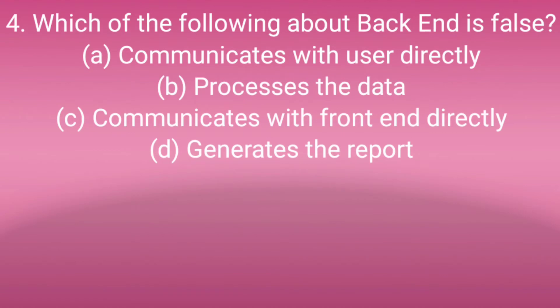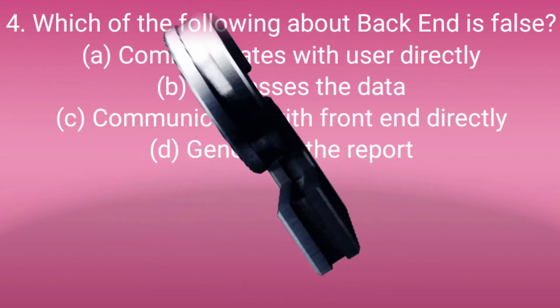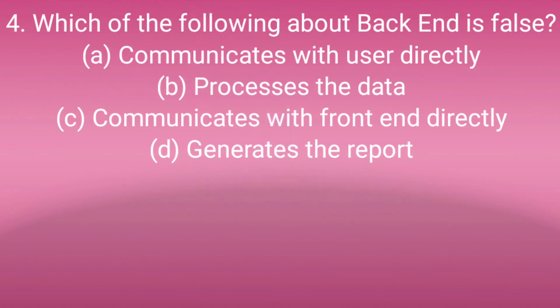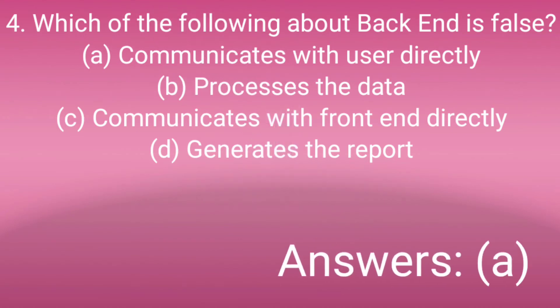Question number four: Which of the following about back end is false? Option A: It communicates with the user directly, Option B: It processes the data, Option C: It communicates with front end directly, Option D: It generates the data report. The answer is A — communicates with user directly — which is false for back end. Answer is A.